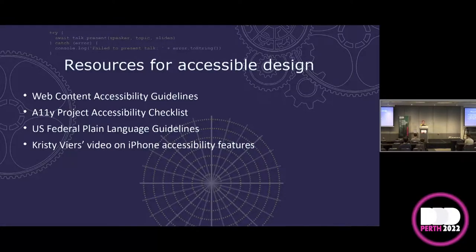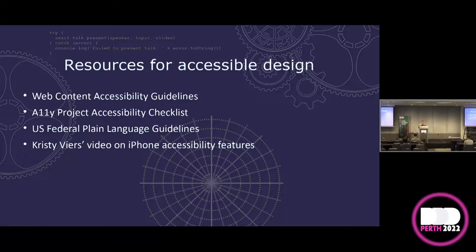If you want to do this well, there are a bunch of resources. The Web Content Accessibility Guidelines are the canonical resource. If you find those too difficult or you're doing this for the first time, the Accessibility Project has produced a checklist where you can just tick boxes to work out if you actually follow the guidelines. For intellectual and cognitive disabilities, the main resource is the US Federal Plain Language Guidelines. There's also a blind woman called Christy Veers who produced a video that went viral on Twitter showing how she uses her iPhone — it shows what's possible when you think outside the box and design for a wide variety of perspectives. The iPhone has Braille keyboards and haptic touch features which deliver data you'd usually only get visually.